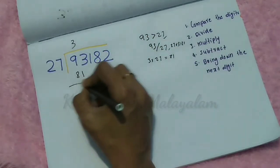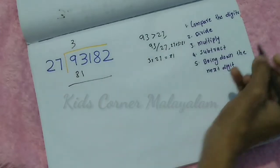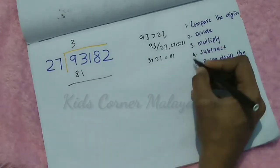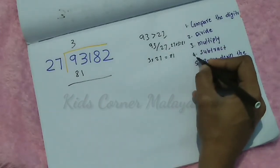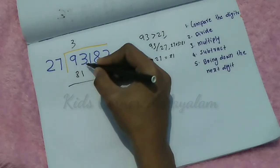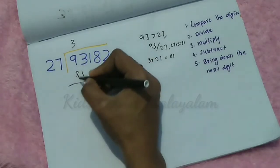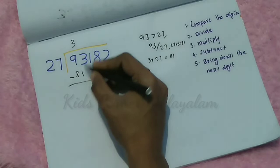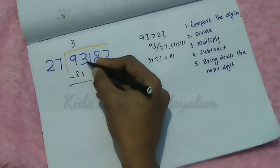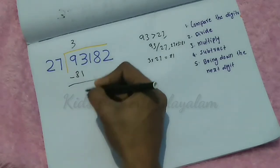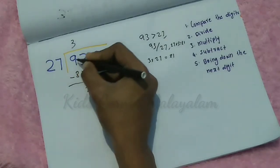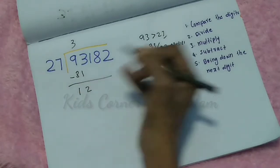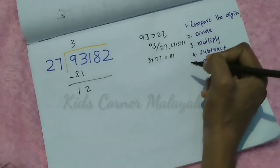The fourth step is subtract. We subtract: 93 minus 81. So 3 minus 1 is 2, and 9 minus 8 is 1. Then we have 12.